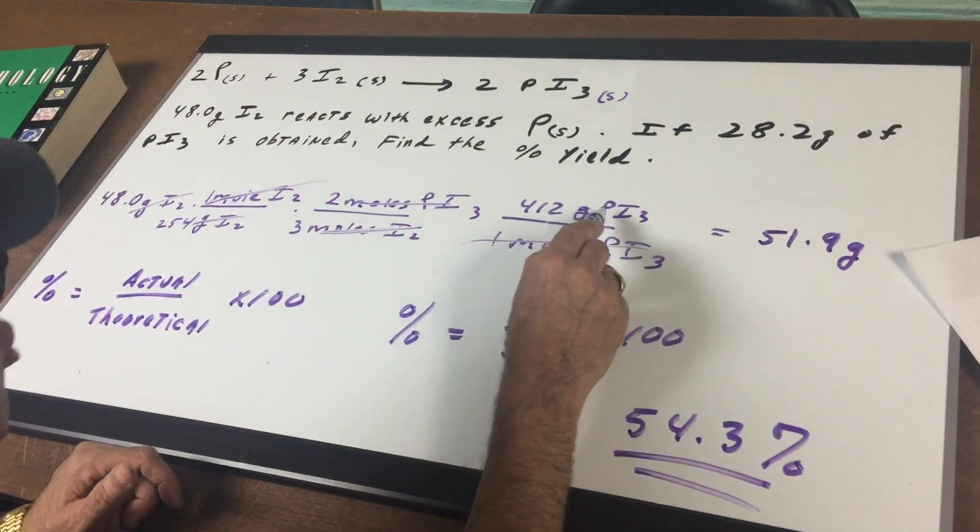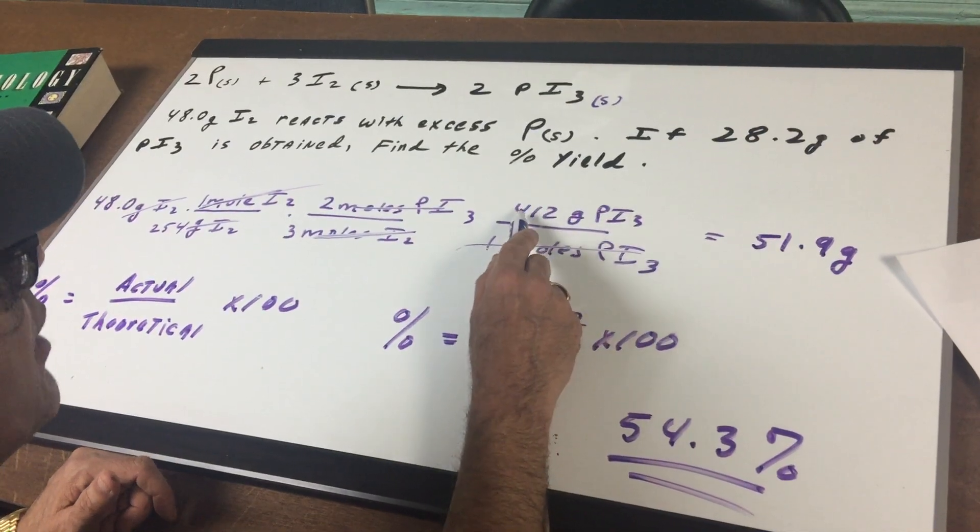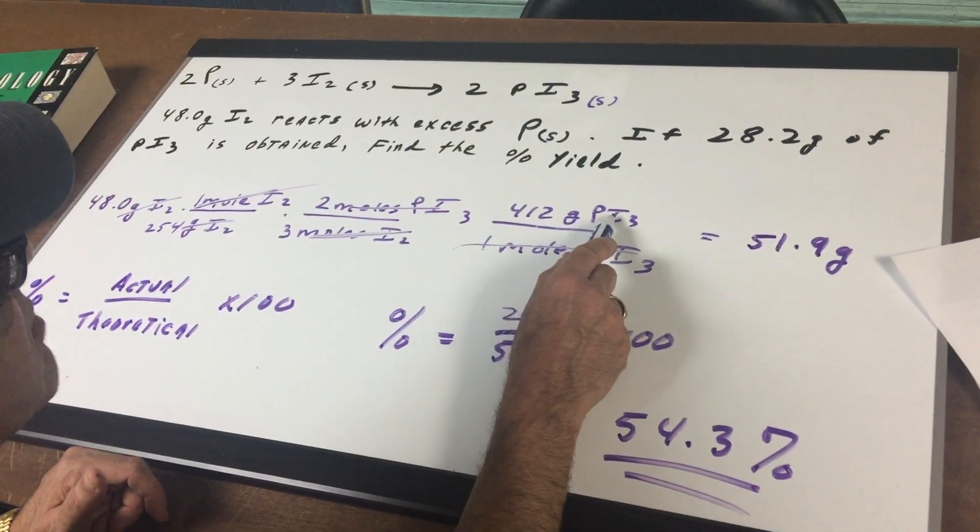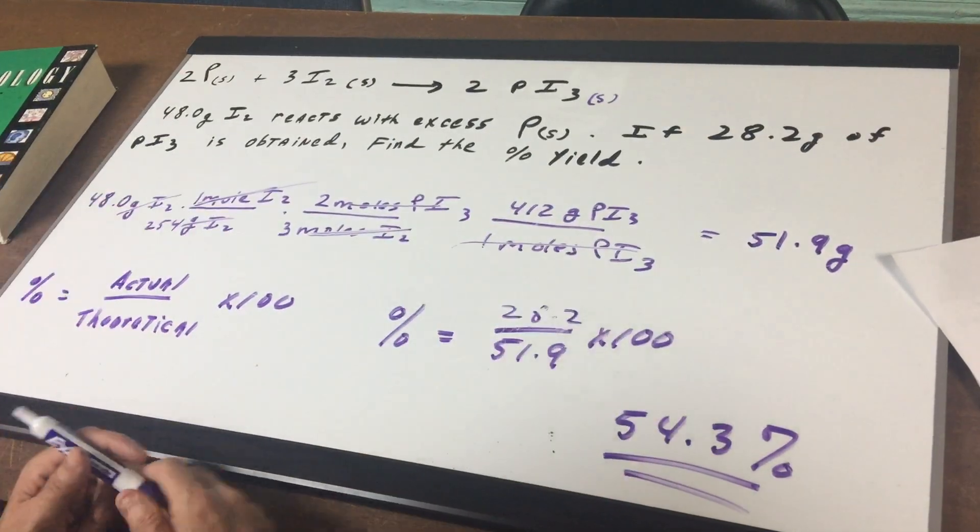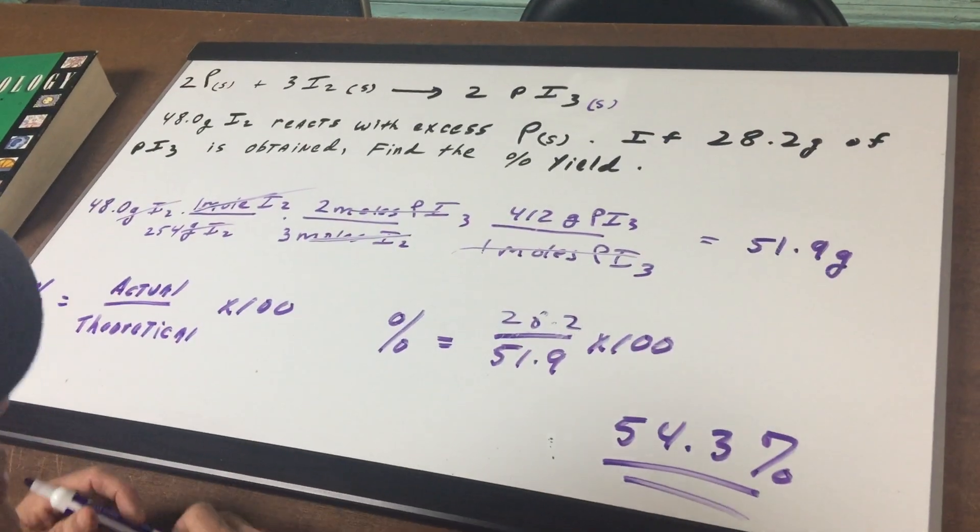Crosses out, you look up the weight of PI₃, it's 412, so there's 412 grams of PI₃ per mole. Moles cancel and we get 51.9 grams, which is around 52.